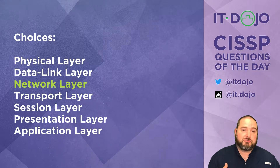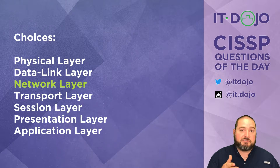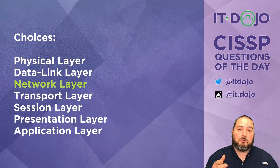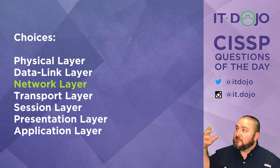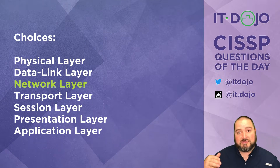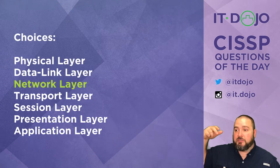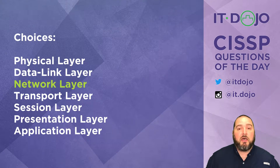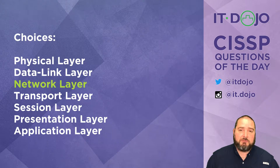IPsec comes in two basic flavors: there's Authentication Headers (AH), which provides data integrity services, and there's also Encapsulating Security Payload (ESP), which provides confidentiality services. Each of those is designed to take anything that's part of the TCP/IP protocol suite above the IP layer — whether it's ICMP, TCP, or UDP — and provide either the confidentiality or integrity mechanism for it, then package that stuff up inside an IP packet.